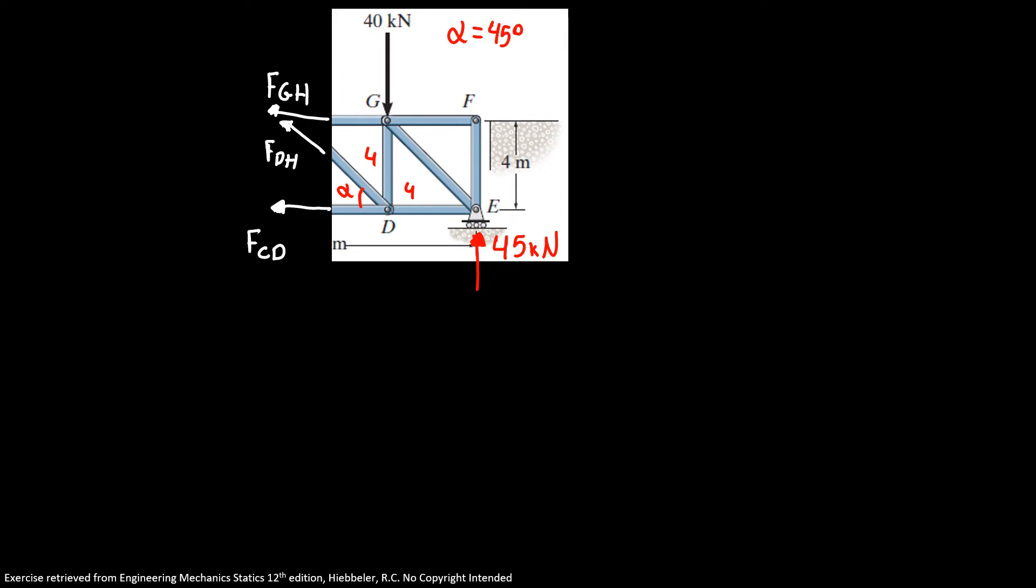Now I'm going to start by doing the sum of forces in Y equals zero. And then I have 45 minus 40 plus FDH times sine of 45 degrees equals minus 5.